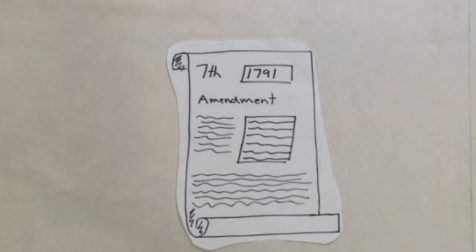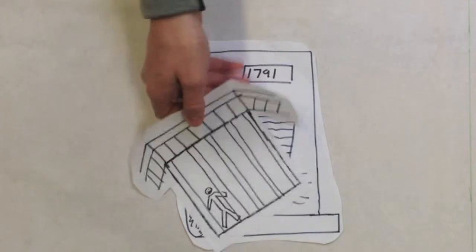The Seventh Amendment has the right to trial by jury, shall be preserved, nor excessive fines.